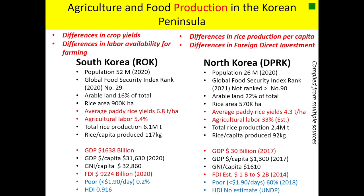When we look at the Korean Peninsula and agriculture and food production, one cannot help but contrast the two parts. In this slide, I show in a summarized manner some of the differences in agriculture and food production — differences in crop yields as exemplified by the most important crop, paddy rice. In the south, paddy rice yields average 6.8 tons per hectare. In the north, paddy rice yields average about 4.3 tons per hectare — quite a big yield gap indeed.